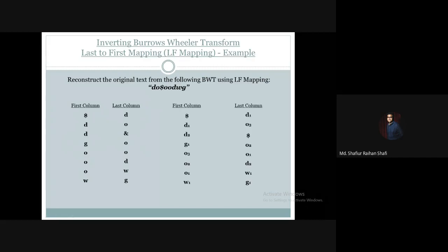Now, in these columns, we can number the elements. In the last column, the first D is D1, and correspondingly in the first column the first D is also D1. In the last column, the second D is D2, and in the first column the second D is also D2. Similarly, in the last column the first O is O1 and the second O is O2, and in the first column O1 and O2 are assigned in the same way.